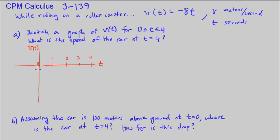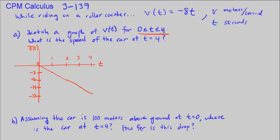It's going to go down 8 for every 1. So I'll mark negative 8, negative 16, negative 24, negative 32 on the velocity axis. It goes down 8 over 1, down 8 over 1, down 8 over 1, down 8 over 1. So this is the sketch — just a line between 0 and 4 seconds.